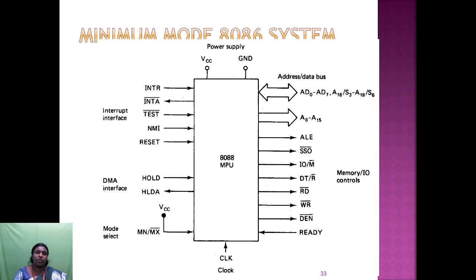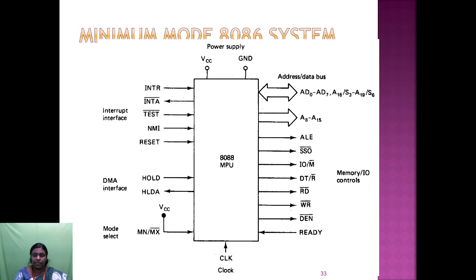The minimum mode 8086 system has VCC power supply and three types of interfaces: interrupt interface, memory interface, and IO interface, with mode selection for maximum or minimum mode. The address/data bus, address latch enable, status signal pins, M/IO pin, data transmit/receive, read/write, and data enable ready pins are all present in the minimum mode system.